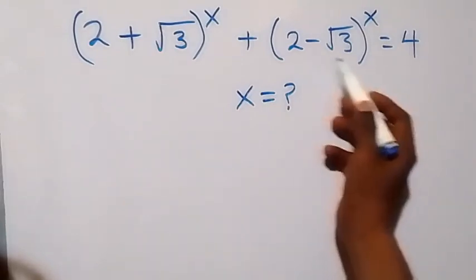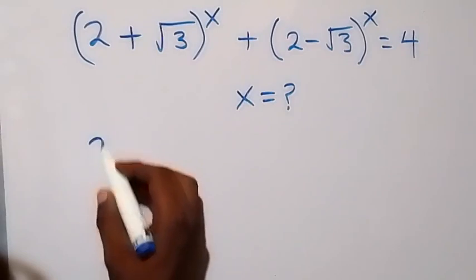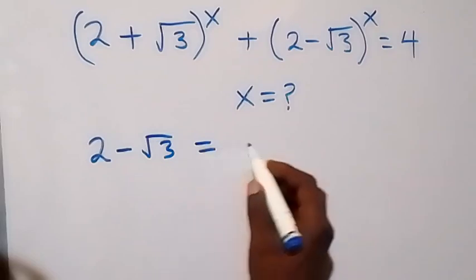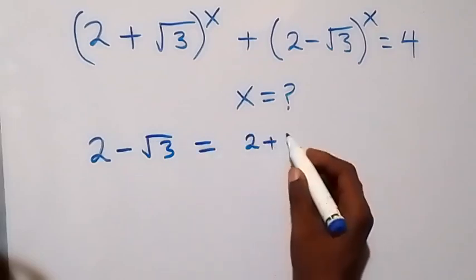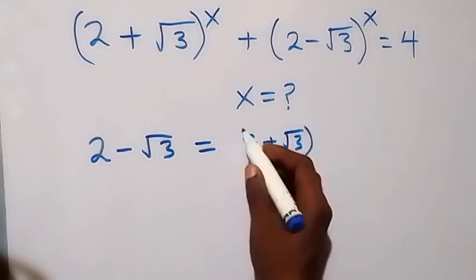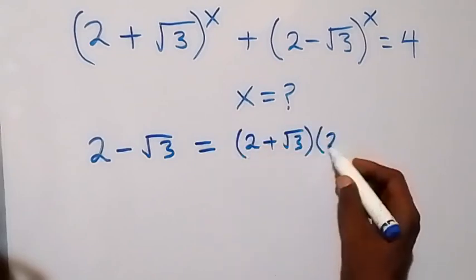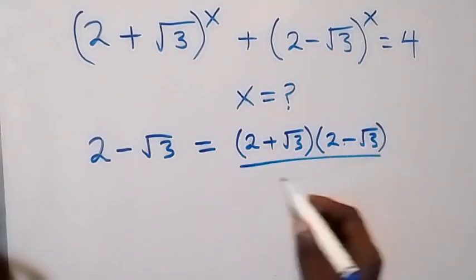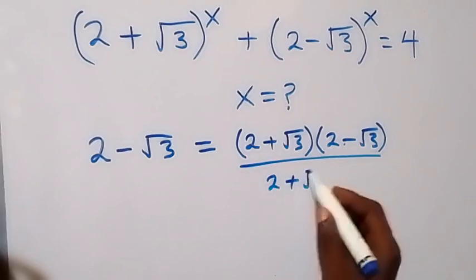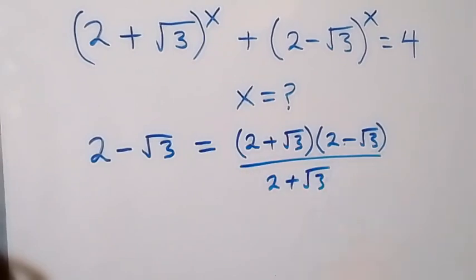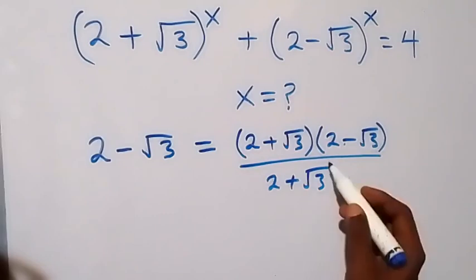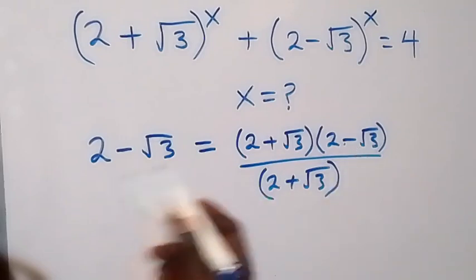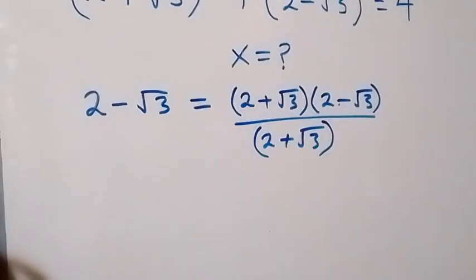From here, we can write 2 minus √3, and this will be 2 minus √3, which equals 2 plus √3 times 2 minus √3, then divided by 2 plus √3. We can write it this way because 2 plus √3 cancels out, leaving 2 minus √3.